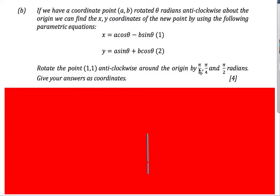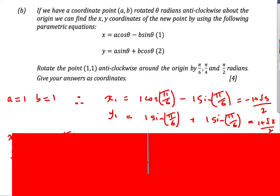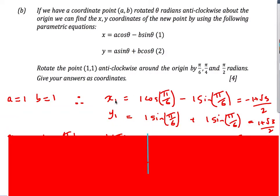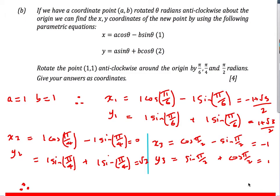For the first case I substitute pi/6 into the parametric equations. It's a calculator paper so I let the calculator do the work. With a=1, b=1 and theta=pi/6, I get my x-coordinate and y-coordinate. I do the same for pi/4 and get those coordinates, and for pi/2 I get those coordinates. I should write each result as a coordinate pair, since the question asks for coordinates.